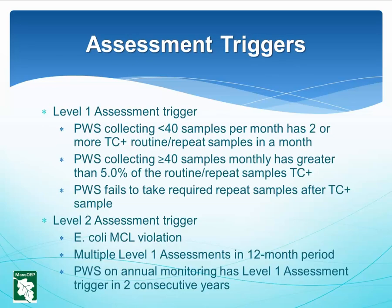Assessment Triggers: Level 1 assessment triggers are caused by a PWS collecting fewer than 40 samples per month that has 2 or more total coliform positive routine and/or repeat samples in a month; a PWS collecting 40 or more samples per month that has greater than 5% total coliform positive routine and/or repeat samples; or a PWS that fails to take the required repeat samples after a total coliform positive. Level 2 triggers are caused by an E. coli MCL violation, multiple Level 1 assessments in a 12-month period, or a PWS on annual monitoring that has a Level 1 trigger in 2 consecutive years.